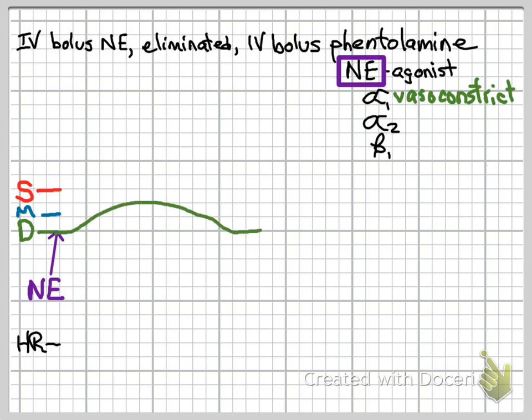This will manifest as an increase in diastolic blood pressure. Systolic blood pressure is built on top of diastolic blood pressure, so you would expect a parallel rise. However, norepinephrine is also an agonist of beta-1 receptors — it's going to increase heart rate and cardiac contractility, resulting in an increase in stroke volume and cardiac output. So the rise in systolic pressure will be of greater magnitude than the rise in diastolic pressure.